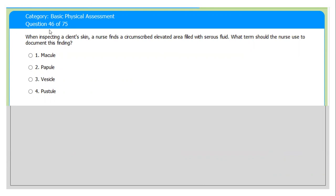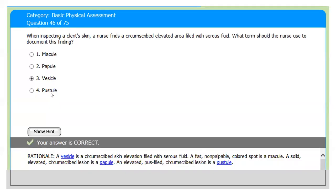Next question. When inspecting a client's skin, a nurse finds a circumscribed elevated area that is filled with serous fluid. There are some skin injuries or lesions that are filled with serous fluid. How do we differentiate it, how do we note it down? What do we call it: macules, papules, vesicles, or pustules? Which one?